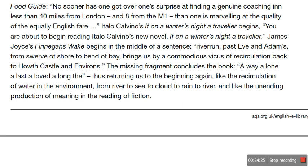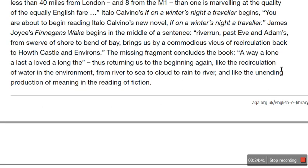James Joyce's Finnegans Wake begins in the middle of a sentence: 'riverrun, past Eve and Adam's, from swerve of shore to bend of bay brings us by a commodious vicus of recirculation back to Howth Castle and Environs.' The missing fragment concludes the book: 'A way, a lone, a last, a loved, a long the.' And so it's a cyclical structure, a bit like Blood Brothers is. It thus returns to the beginning again, like the recirculation of water from the river to the sea to the cloud to the rain to the river. Cyclical books are rare but fabulous.